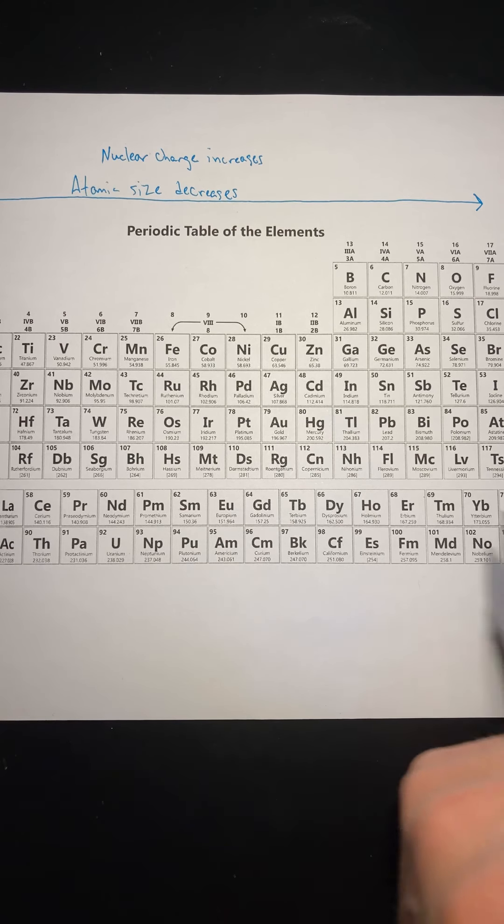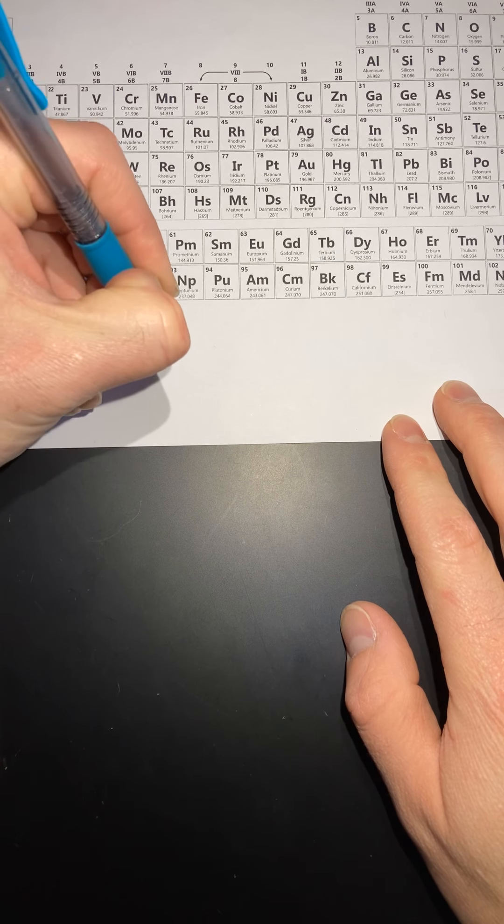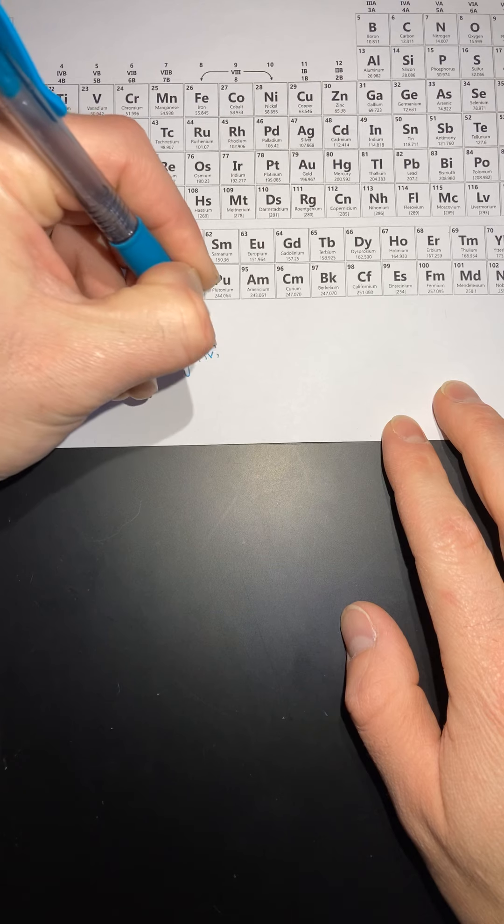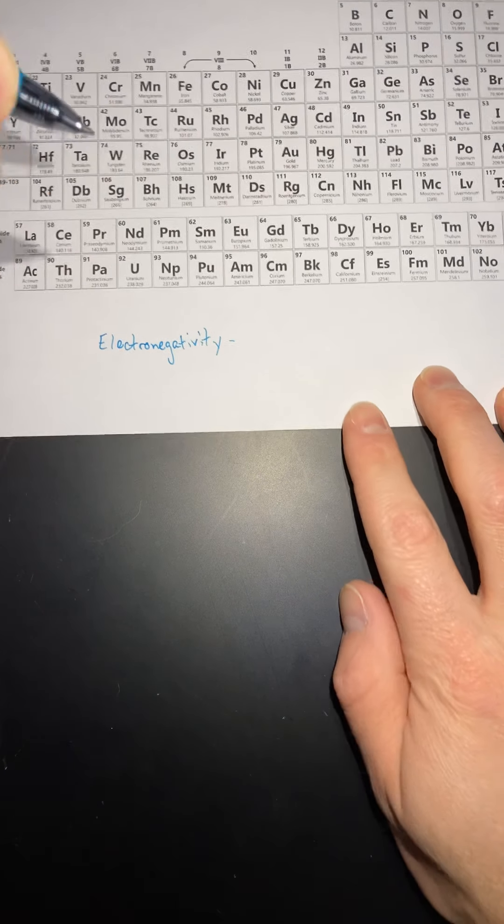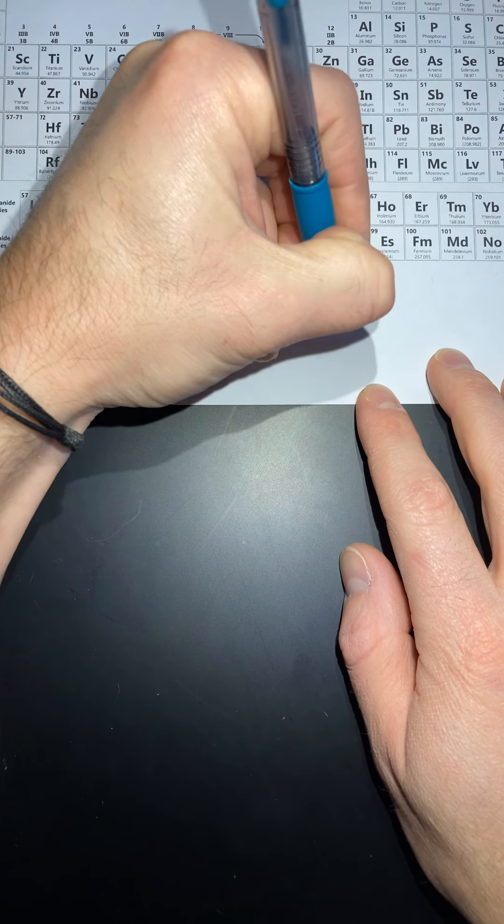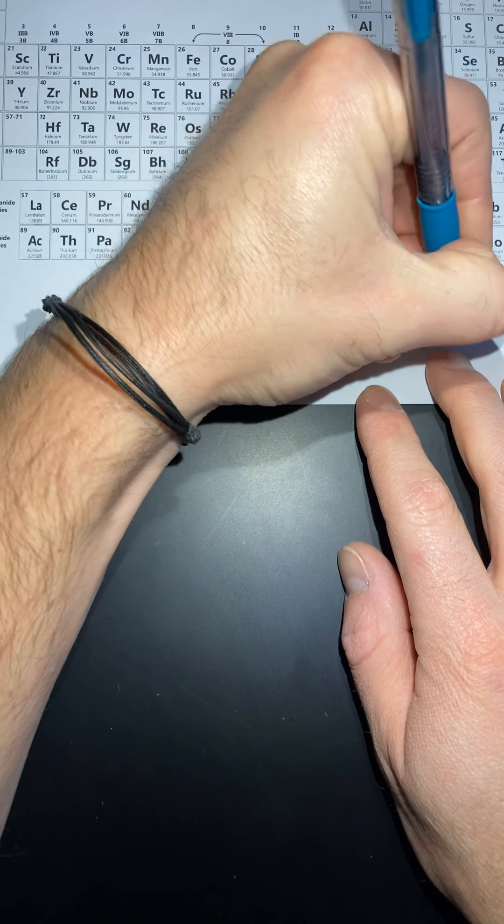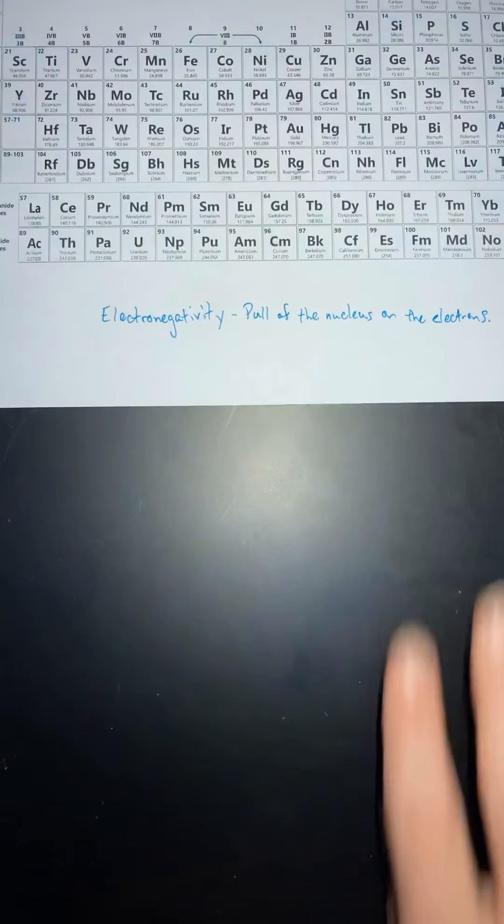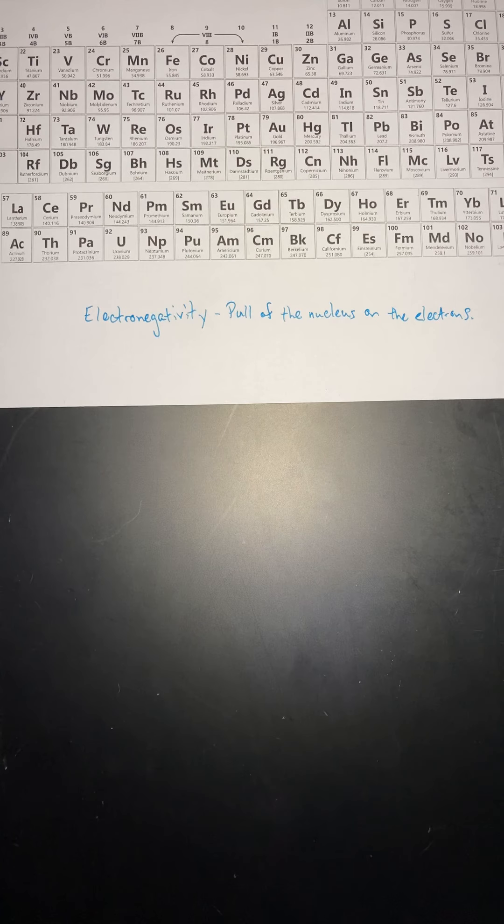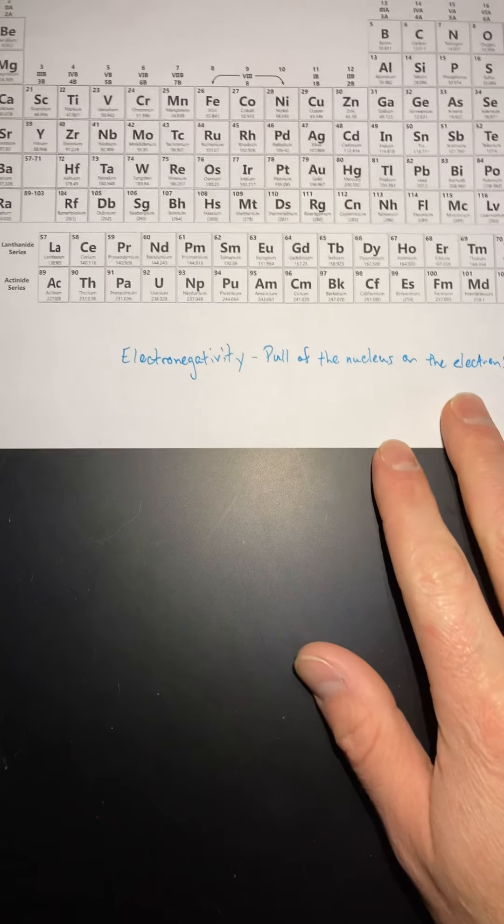Now, the other term that we're going to take a look at just real quick is called electronegativity. And this is the pull of the nucleus on the electron. So, the higher the electronegativity is, the more that those, the more that the nucleus pulls on the electrons. The less that the electronegativity is, the less that it pulls on the electrons. So, think about this.